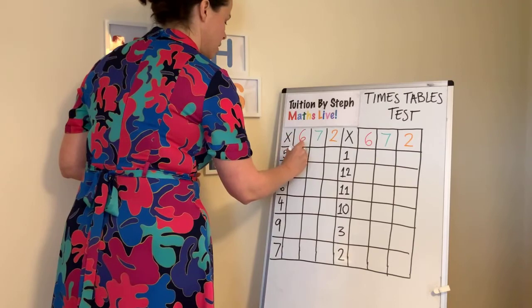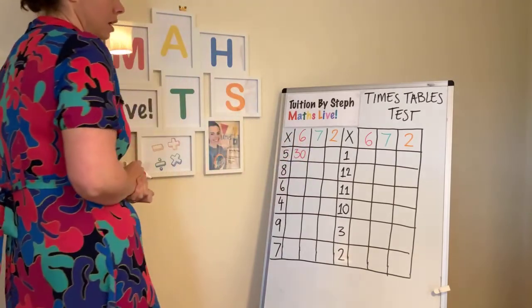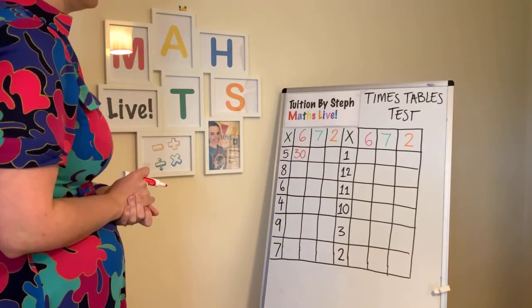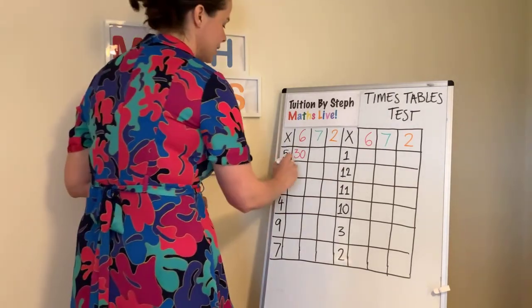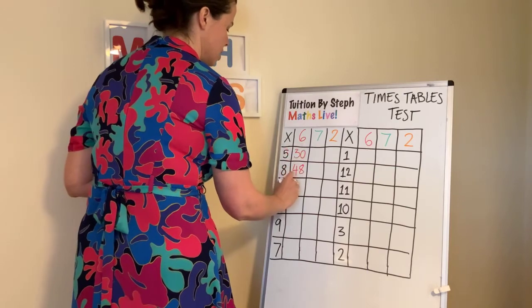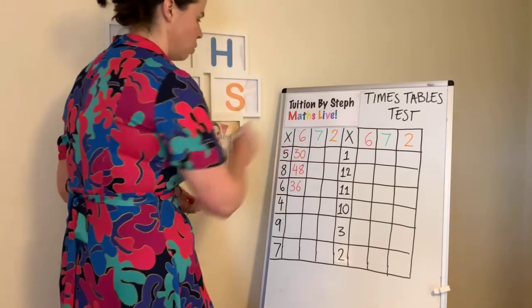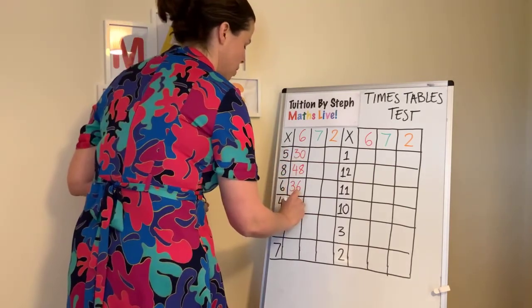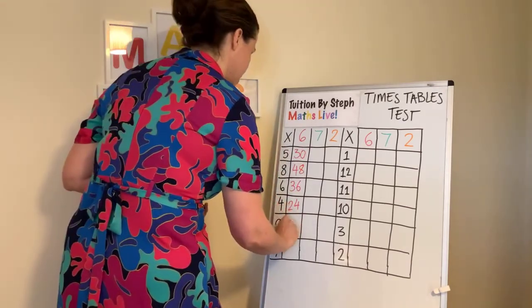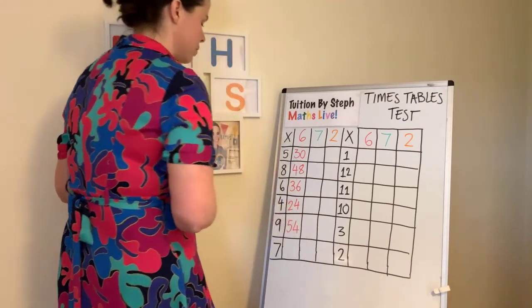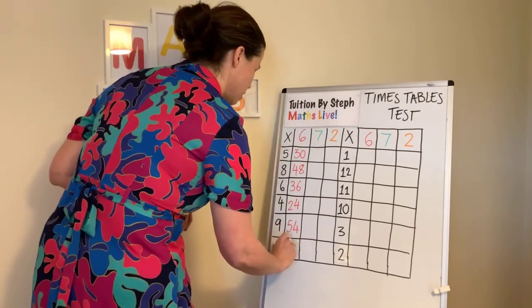So, six fives, 30. Six fives are 30. Seven sixes are 42. Eight sixes, 48. Six sixes, 36. Four sixes, 24. Nine sixes, 54. Seven sixes, 42.